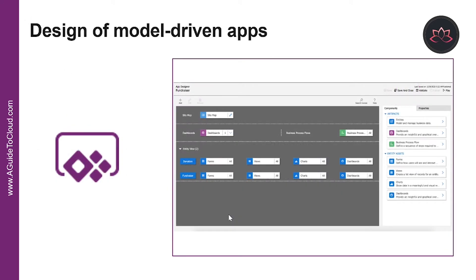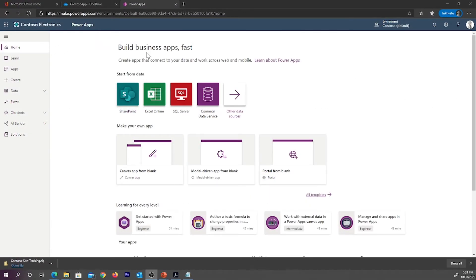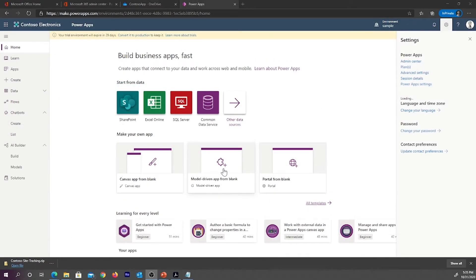Let's have a quick look at an app designer for an example model-driven app called Fundraiser. As you can see, there are two entities: Donation and Fundraiser. Now let's see an example of how to create a sample model-driven app. I'm going to take you to the Power Apps portal at make.powerapps.com. Let's create a sample model-driven app from blank.